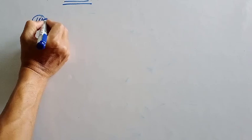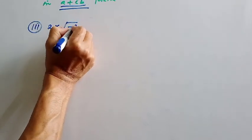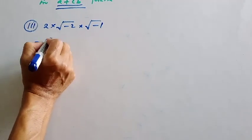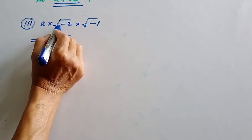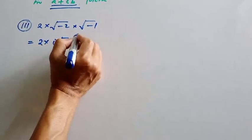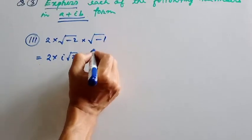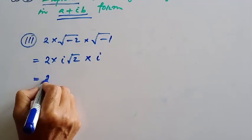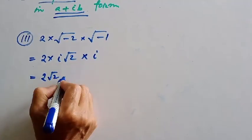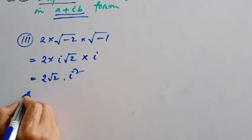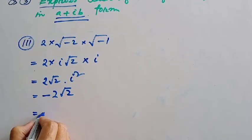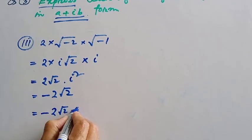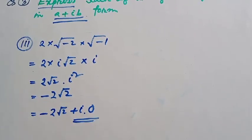Question number 3: 2 into root over minus 2 into root over minus 1. This means 2 into i root 2, because root over minus 1 equals i. So we get 2 root 2 into i. Then i square is equal to minus 1, giving us 2 root 2 into i square, resulting in minus 2 root 2 plus i 0, expressed in a plus ib form.